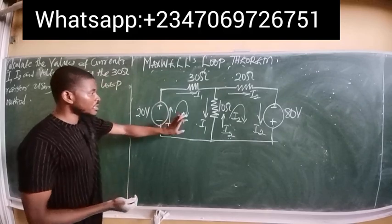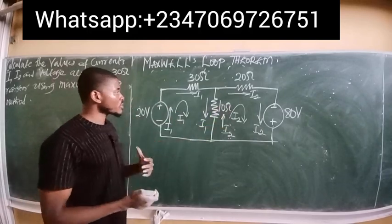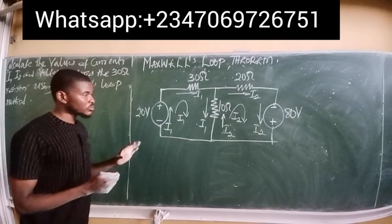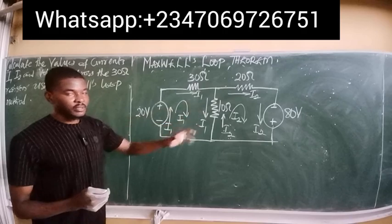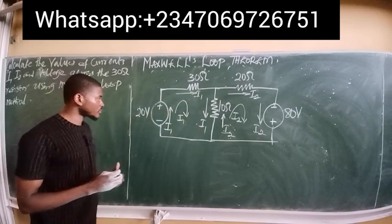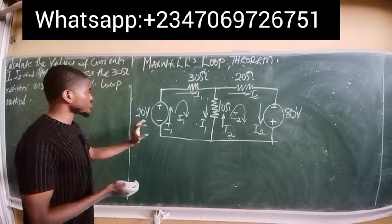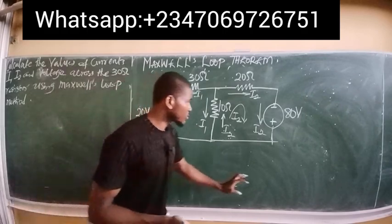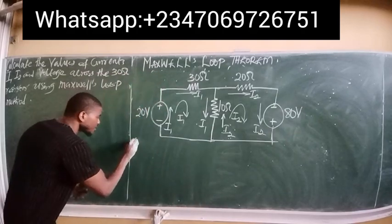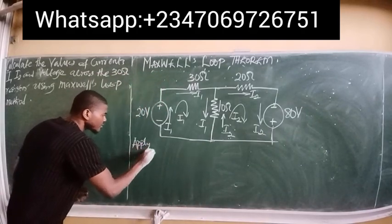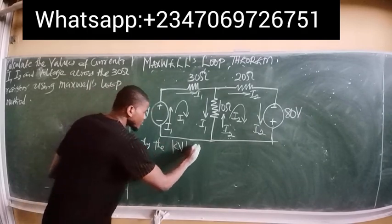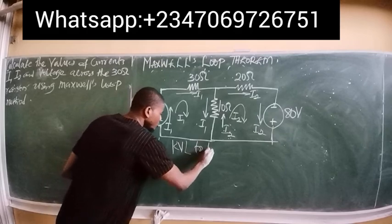We need to apply Kirchhoff's voltage law to find each of the currents flowing through the resistors. Each of these sources was given as 20 volts and this one was also given as 80 volts. So let's apply KVL to loop 1.